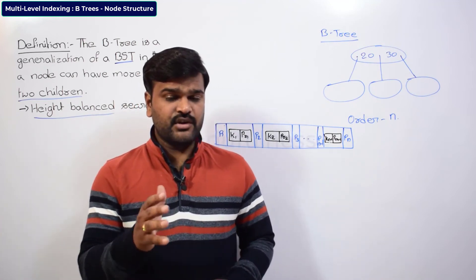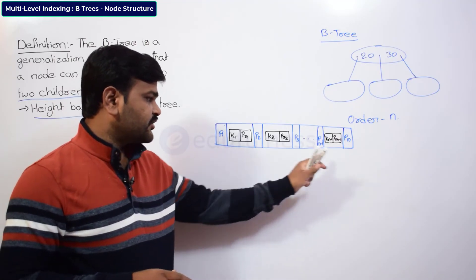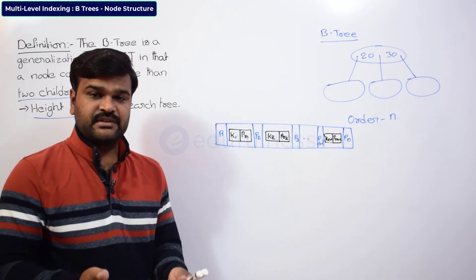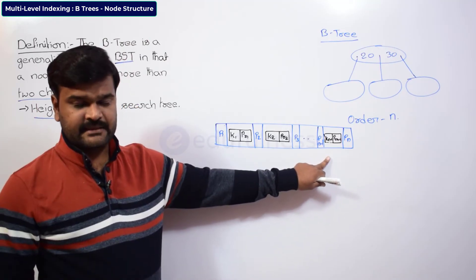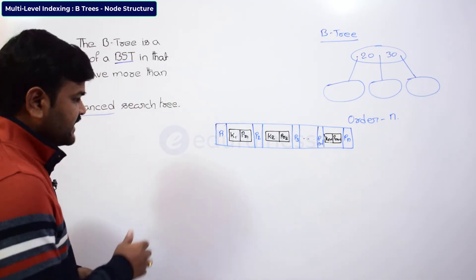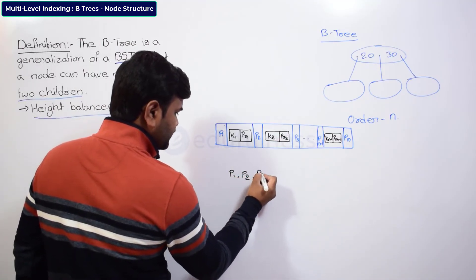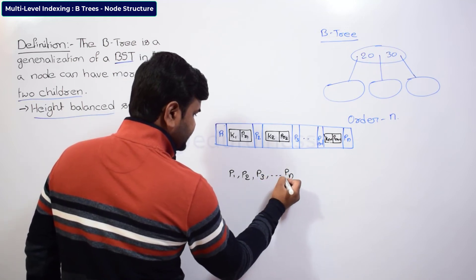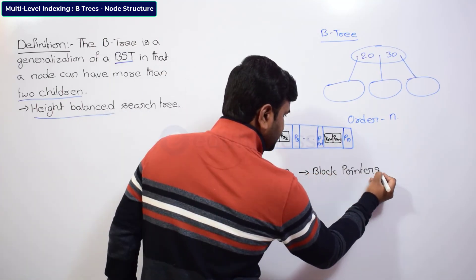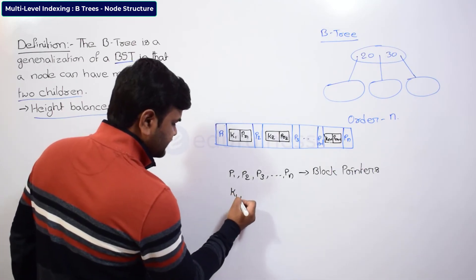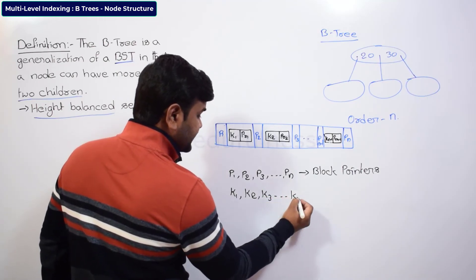If you are preparing for competitive exams or for your academics, based on this node structure you are going to have many numerical problems and many insights we are going to discuss. So this node structure you must understand very clearly for B-trees. Here you can write down P1, P2, P3 and so on, and the last key possible is Kn minus 1.